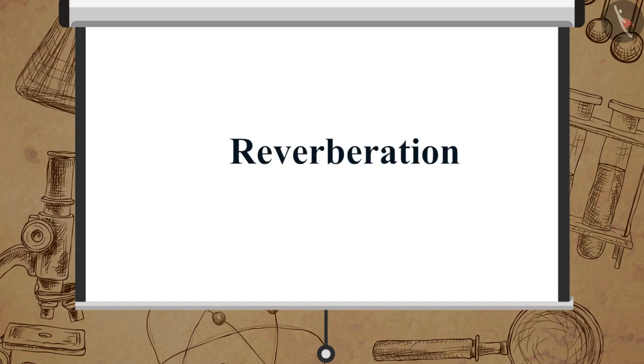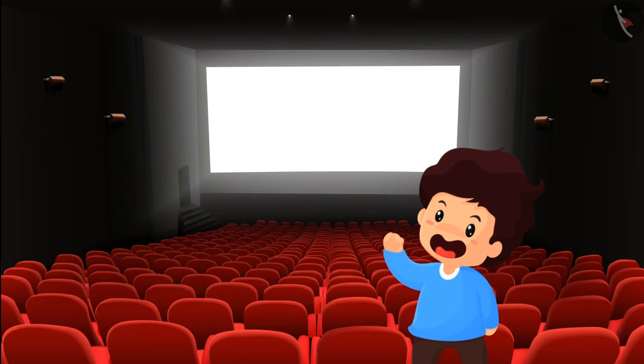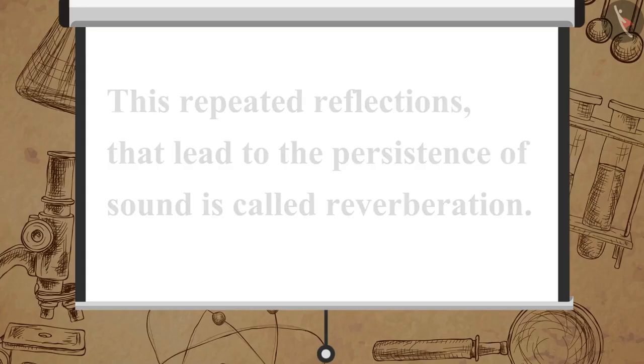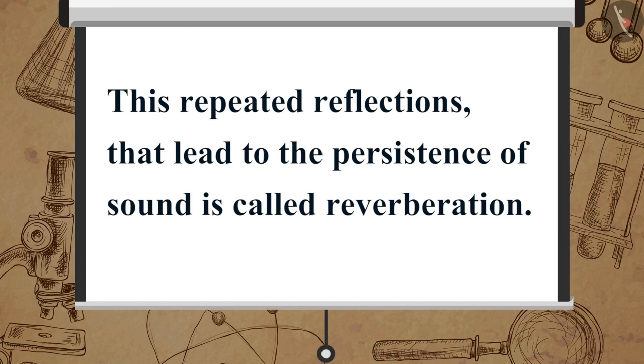Now, let us learn about reverberation. When we create a sound in a big auditorium, it persists for some time due to repeated reflections from the walls until it is reduced to a value where it is no longer audible. This repeated reflection that leads to the persistence of sound is called reverberation.